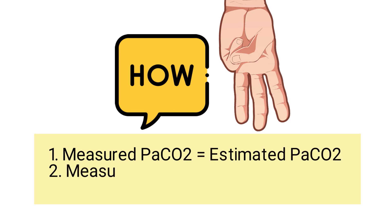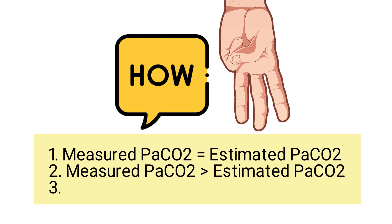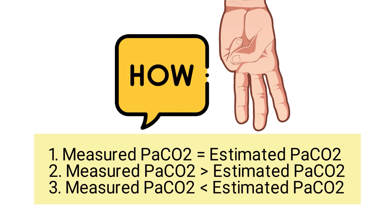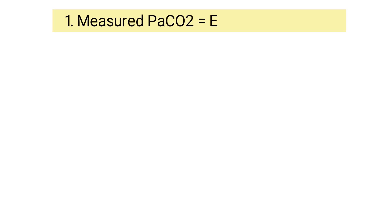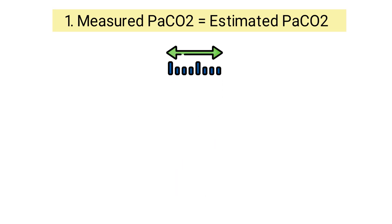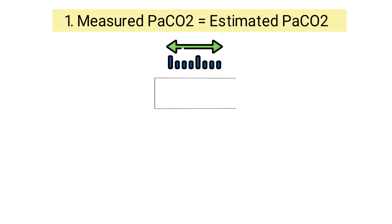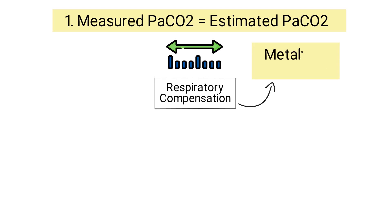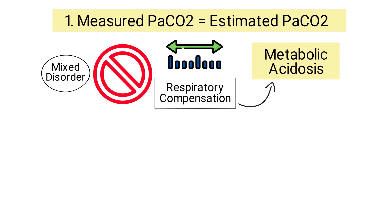This comparison can result in three possible scenarios: the measured PaCO2 is equal to, greater than, or less than the estimated PaCO2. If the patient's PaCO2 is within the expected range, it indicates that respiratory compensation is taking place — this is considered pure metabolic acidosis. However, if the patient's PaCO2 is not within the expected range, it means a mixed disorder is present.